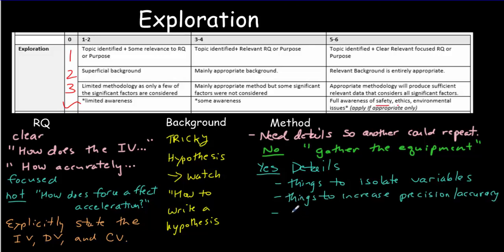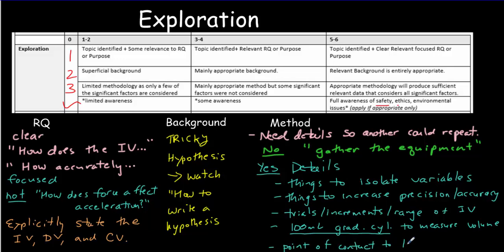What you do need to do: give details in particular of things that you do to isolate variables. We're looking for good experimental skills, things that you do to make your measurements more precise or accurate. You should be telling the reader how many trials, how many increments, and the range of the independent variable. Do give the details of the measuring equipment - don't just say we measured the volume, say you used a hundred milliliter graduated cylinder. Also give the details of the measurement itself. If you're measuring the length of a pendulum, exactly where are you measuring? From the point of contact to the top of the bulb.